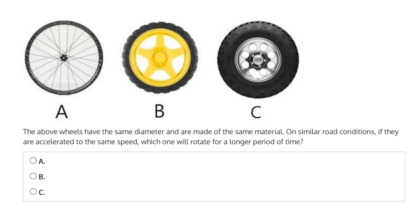This question says the above wheels have the same diameter and are made of the same material. On similar road conditions, if they are accelerated to the same speed, which one will rotate for a longer period of time?